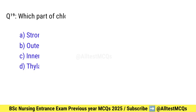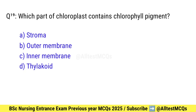Question number 19. Which part of the chloroplast contains the chlorophyll pigment? Correct option is D: Thylakoid.